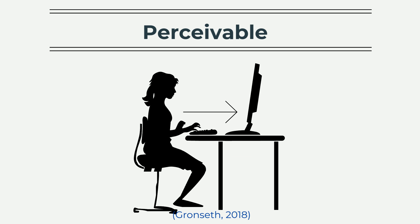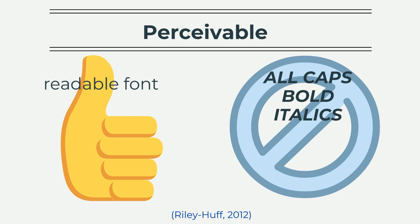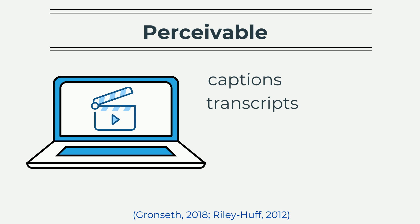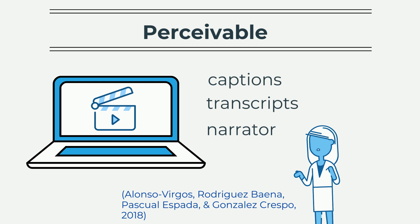For a website to be perceivable, users must be able to perceive, see, or hear the site and resources. The text font should be readable without use of all caps, misuse of bold text, or italics. High color contrast should be used with fonts, the background, and the foreground. Videos should be captioned and transcripts should be provided, and adding a visible narrator to an audio file helps some users' perception.